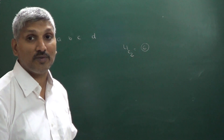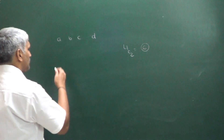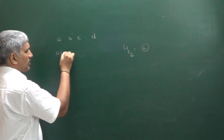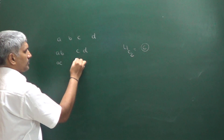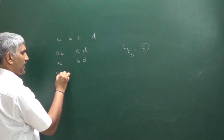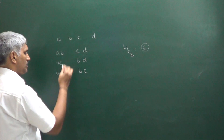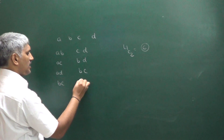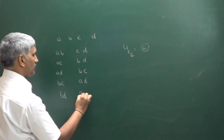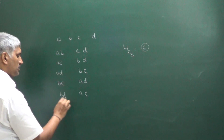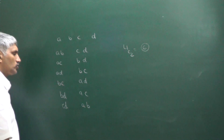Let me write down those 6 possibilities. Dividing 4 items into 2 equal groups: {A,B} and {C,D}; {A,C} and {B,D}; {A,D} and {B,C}; then starting with B: {B,C} and {A,D}; {B,D} and {A,C}; and {C,D} and {A,B}. Observe that these 3 and the other 3 are the same — they repeat. So when equal groups are there, there is overcounting.